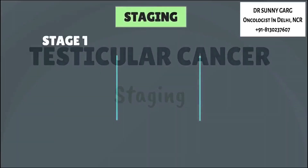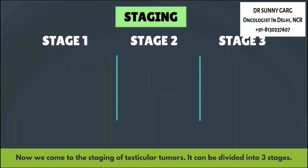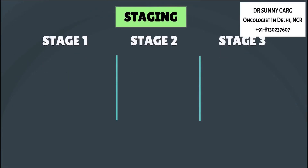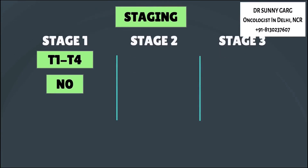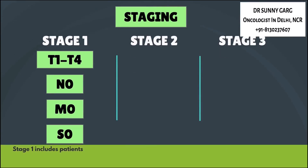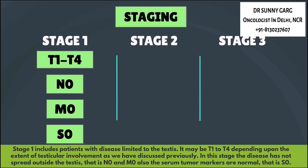Now we come to the staging for testicular tumours. It can be divided into three stages. Stage 1 includes patients with the disease limited to the testes. It may be T1 to T4 depending upon the extent of the testicular involvement, as discussed previously.